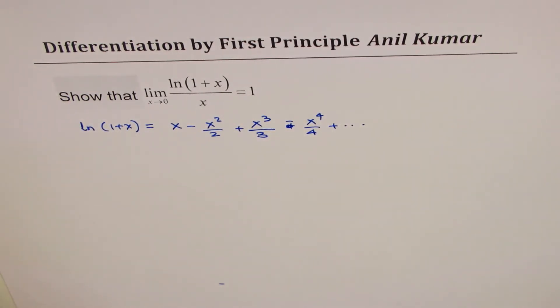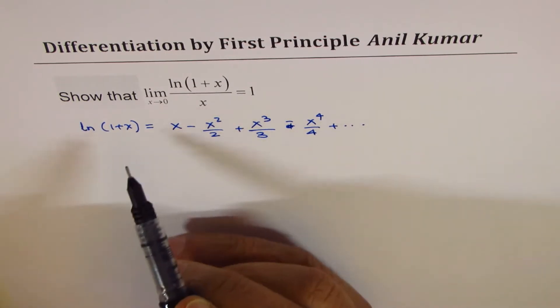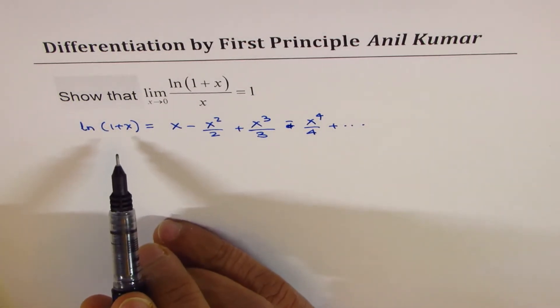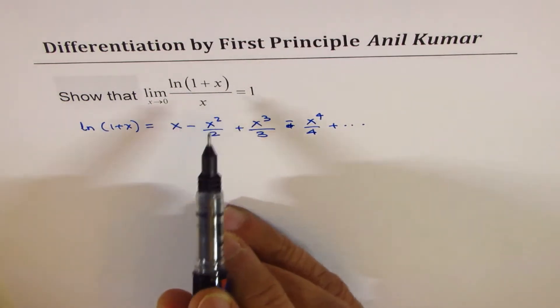So there are many such formulas for e to the power of x and ln x which can be used to prove such limits.